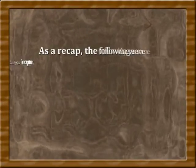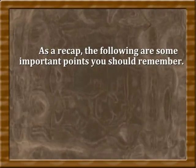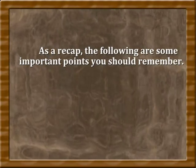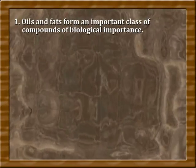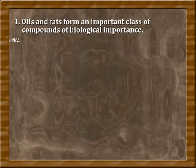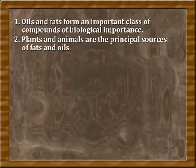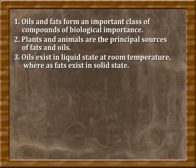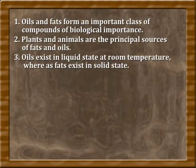Let us quickly recollect all the details we learnt in today's lesson. As a recap, here are some important points to remember. Oils and fats form an important class of compounds of biological importance. Plants and animals are the principal sources of fats and oils. Oils exist in liquid state at room temperature whereas fats exist in solid state.